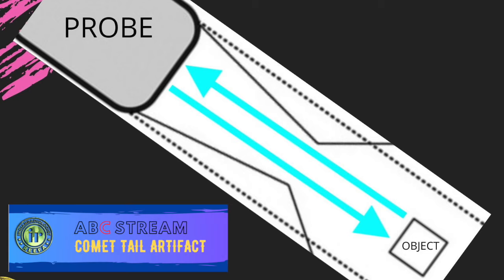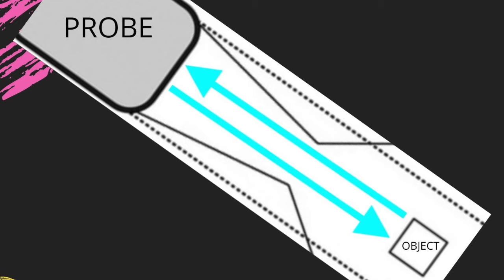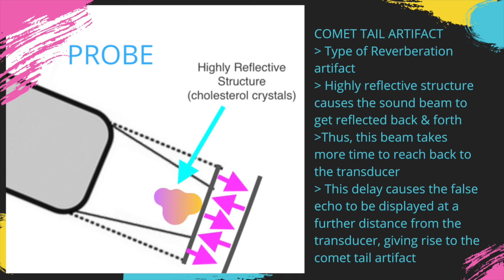The C in ABC STREAM is the comet tail artifact. Not all objects reflect sound straight back to the probe. Sometimes a structure may be highly reflective — for example, cholesterol crystals in the gallbladder wall — causing the sound beam to reflect back and forth. Due to this back-and-forth motion the beam takes more time to reach the transducer, and this delay causes the false echo to be displayed at a further distance, giving rise to the comet tail artifact.